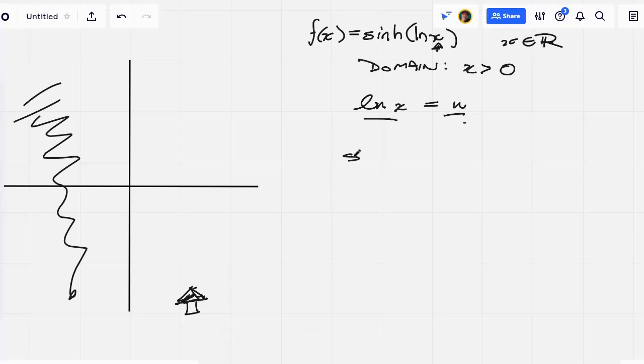First we'll make a substitution: ln x we'll just call u, so we're taking the hyperbolic sine of u, and we're going to use this exponential expression for the hyperbolic sine.